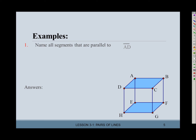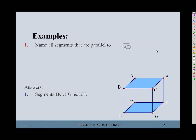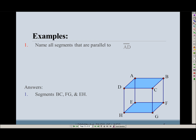So let's do some examples. Name all segments that are parallel to segment AD. Here's segment AD, and all segments parallel to that are the other ones slanted in the same direction. That's segment BC, segment FG, and segment EH. When you write these, make sure you write the segment bar on top.